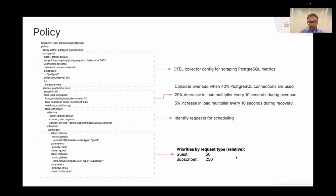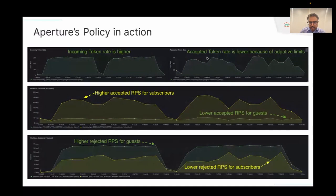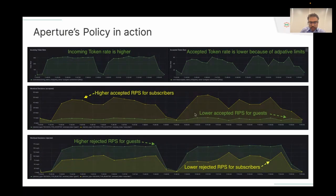Let's look at the metrics once the policy is in place. On the left of the graph, before the policy was deployed, we saw nearly 100% PostgreSQL connection usage when traffic ramped up. After Aperture is installed, overload is prevented, errors like 'too many clients' stop appearing, and traffic prioritization kicks in. The incoming token rate is higher than the accepted rate, showing throttling. Subscribers see a higher acceptance rate versus guests, and guests see a higher rejection rate. The result is roughly a five-times higher acceptance rate for subscribers versus guests — the Weighted Fair Queuing algorithm in action.